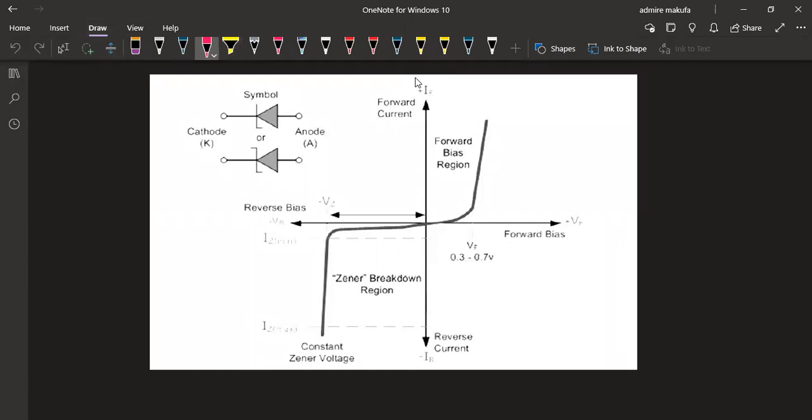If we check here we know the symbol. What we are going to have in this case is the forward current with the forward bias region. This is VF, the forward voltage, and this is VR, the reverse bias in this case in the negative.